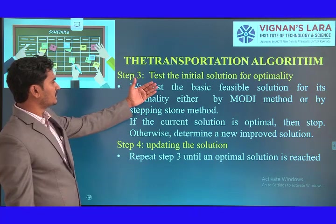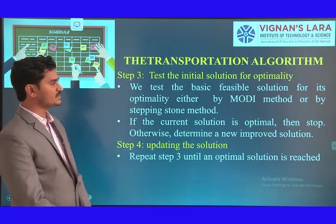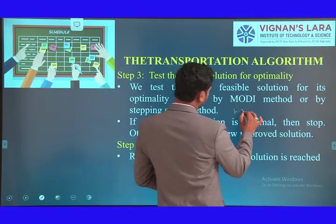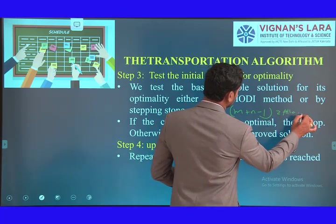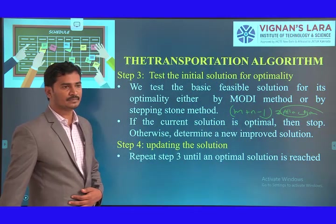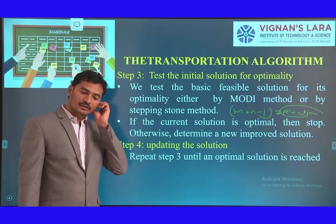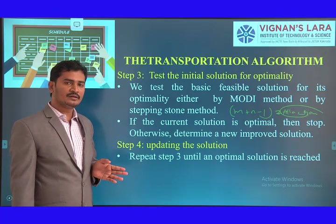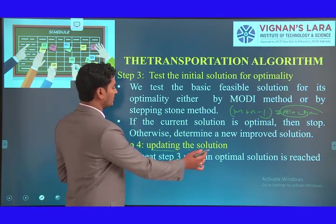Step 3 — test the initial solution for optimality. We test the basic feasible solution for its optimality using either the MODI method or the Stepping Stone method. After verifying m + n - 1 = allocations, we solve using the Modified Distribution (MODI) method or Stepping Stone method, calculate values for all allocated and unallocated cells, check the solution, and finally update the solution.